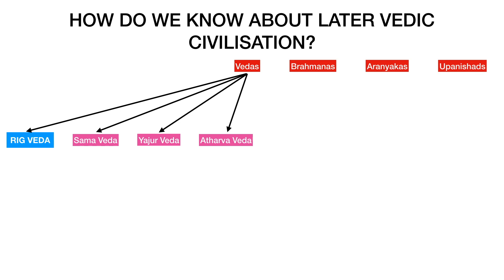In total, the sources of the later Vedic period are Sam Veda, Yajurveda, Atharva Veda, Brahmanas, Aranyakas, and Upanishads. Starting with Sam Veda, it has two major parts — the first includes four melody collections and the second three verse books. Just as in the Rig Veda, the early sections of Sam Veda typically begin with hymns to Agni and Indra but shift to the abstract later on. In the Sam Veda, some of the Rig Vedic verses are repeated.